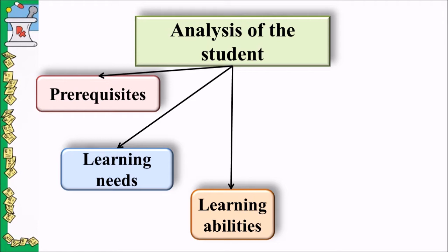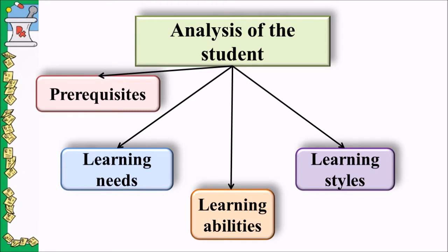There are different learning styles which students have — these are preferred ways of learning. Neil Fleming put forth three basic learning styles: visual learners, auditory learners, and kinesthetic learners, also called the VAK model, which has been discussed in one of my previous videos. Identifying the learning styles helps teachers select appropriate teaching techniques, aids and resources which assist students to learn more effectively.